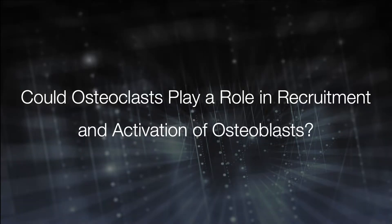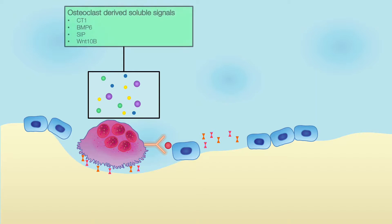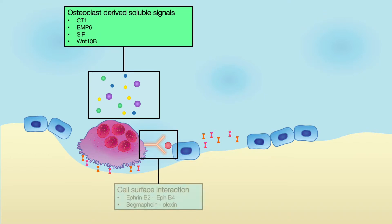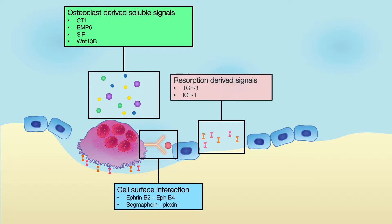But what happens next? The osteoclasts in the area start to recruit osteoblasts, or bone forming cells. Osteoclasts recruit osteoblasts through different pathways. First, by secreting molecules that can recruit or activate the osteoblasts. The second pathway is by direct contact between the osteoclasts and osteoblasts.